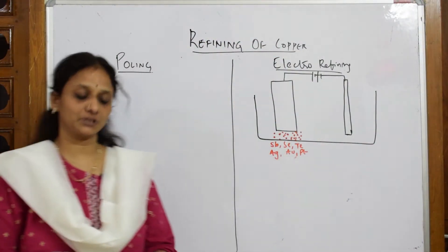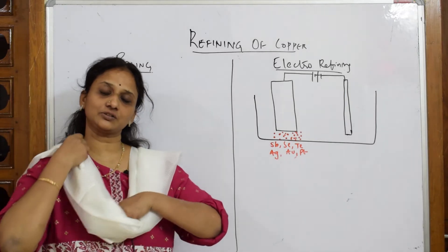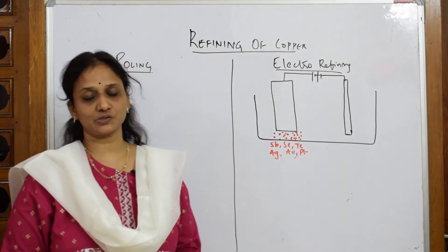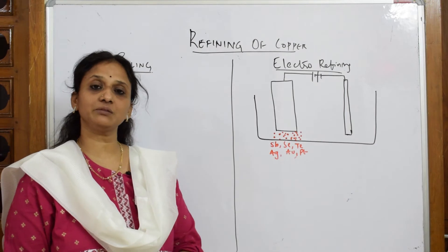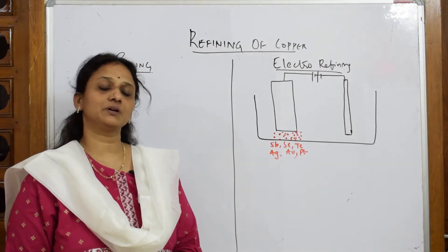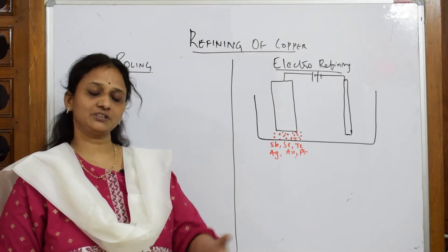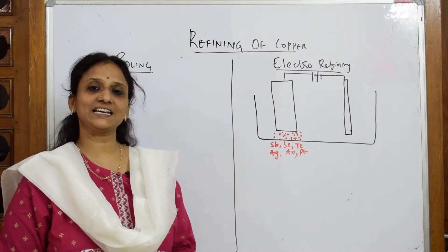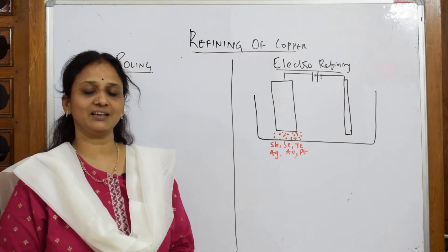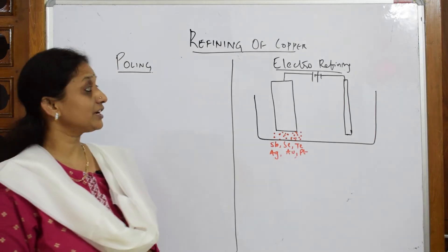We are almost done — smelting is done and the process of obtaining blister copper is also done. Now let us come back and see the refining of copper. The blister copper we've got is 99% pure, and we're going to further purify it to get metallic copper, which is the main aim of extracting copper.